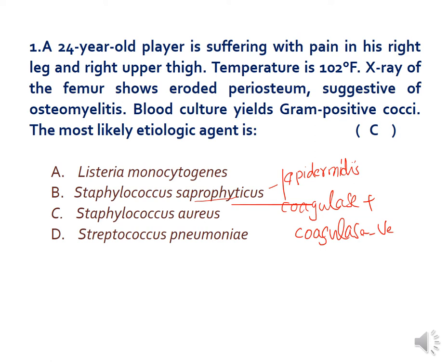Staphylococcus aureus is a nasal carrier — nasal carriage is maintained — and it is a pathogen occurring in 20 to 50 percent of humans. Abscesses are the typical lesions of Staphylococcus aureus, normally following small injuries. From any one focus, organisms may enter the bloodstream and lymphatics to spread to other parts of the body, making it responsible for osteomyelitis.